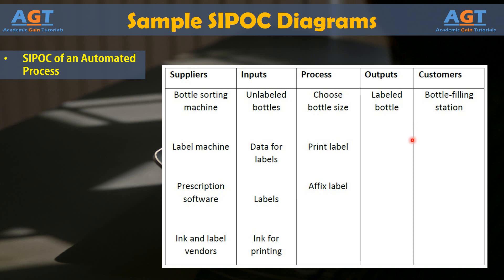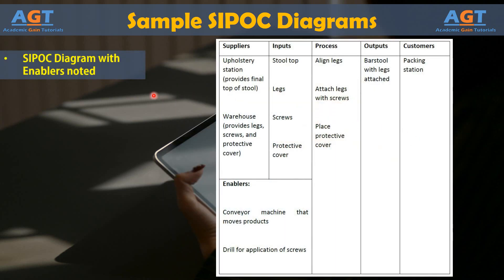Here we are looking at a sample SIPOC diagram illustrating a people-powered factory process with enablers noted. This SIPOC diagram illustrates how enablers might be recorded for your process. The process takes place in a factory that makes furniture, where a person attaches legs to a bar stool on an assembly line. Like the previous samples, we can see the suppliers, inputs, process, outputs, and customers of this process. For this illustration, leg attachment is the last step in the completion of the product, which means the product moves from the leg attachment station to packing and shipping. Enablers noted here include a conveyor machine that moves products and a drill machine for application of screws.